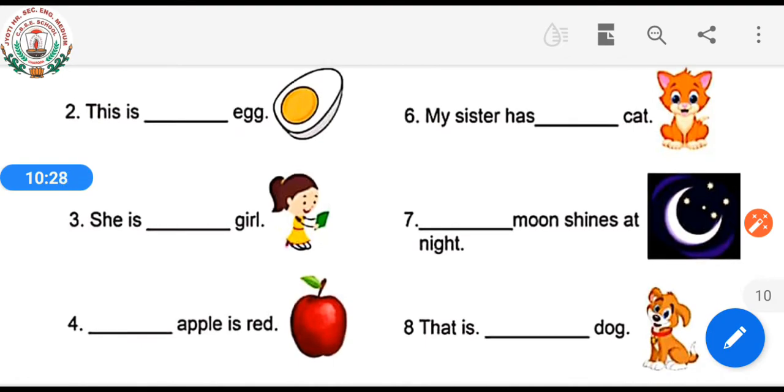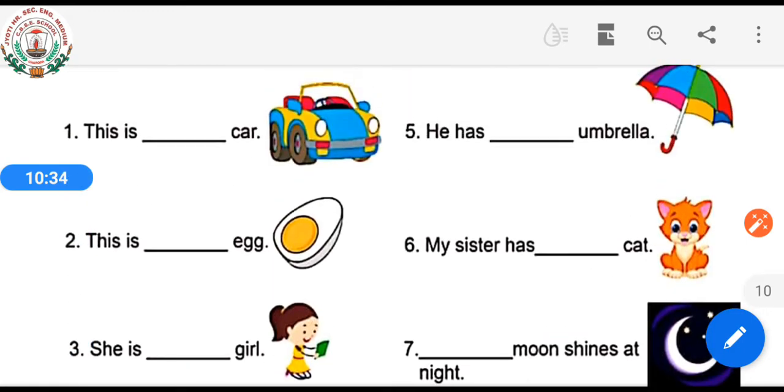Fourth one: Dash apple is red. Fifth one: He has dash umbrella.